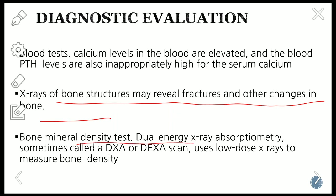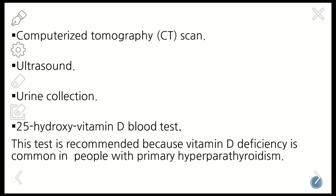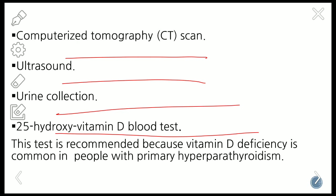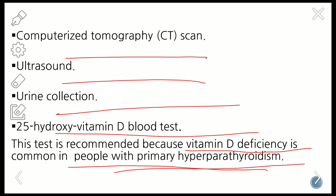Bone mineral density, assessed by dual energy X-ray absorptiometry — sometimes called a DEXA scan — uses low-dose X-ray to measure bone mineral density, which will be decreased. Additional investigations include CT, ultrasound, urine collection, and vitamin D testing. Vitamin D testing is recommended because vitamin D deficiency is common in people with primary hyperparathyroidism.